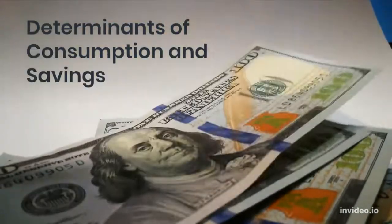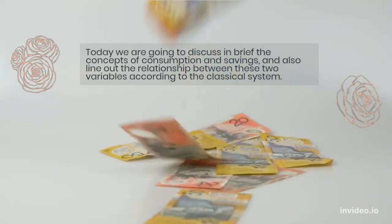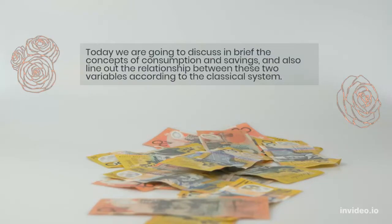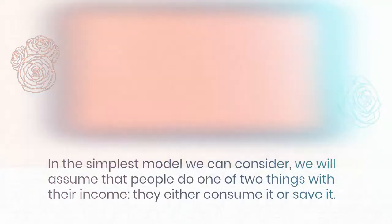Today we are going to discuss and brief the concepts of consumption and savings, and also line out the relationship between these two variables according to the classical system. In the simplest model we can consider, we will assume that people do one of two things with their income — they either consume it or save it.